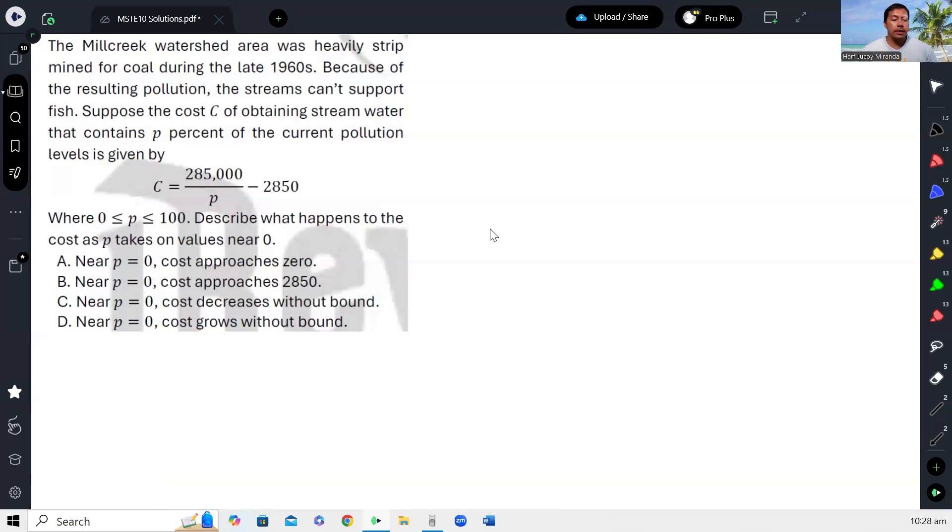Describe what happens to the cost as P takes on values near 0. So, what happens to the cost when P approaches 0? To answer this, we need to find the limit of the cost as P approaches 0. That's what we want to find out.